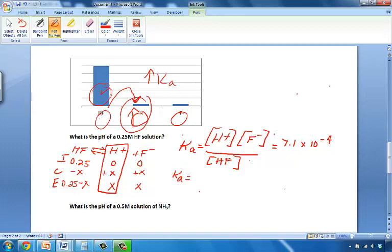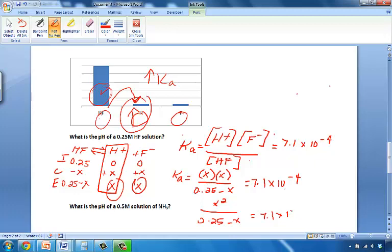Ka equals hydrogen is X, so we'll plug in X for that. Fluoride ion is X, so let's plug in for that. We'll substitute in those variables. HF is 0.25 minus X, 0.25 minus X, and all that should equal 7.1 times 10 to the negative 4. So, let's simplify this a little bit. This will become X squared over 0.25 minus X equals 7.1 times 10 to the negative 4.